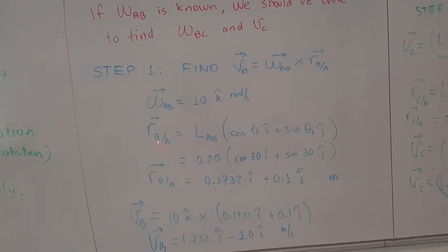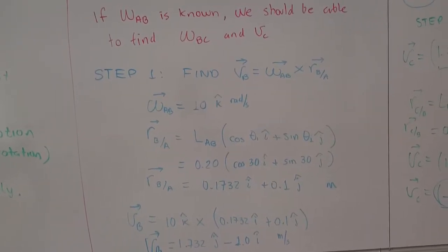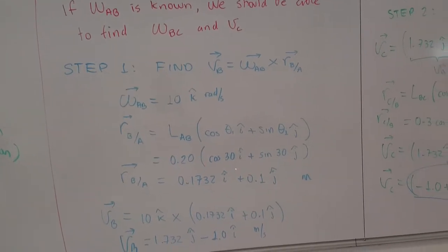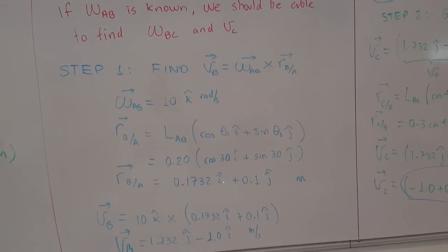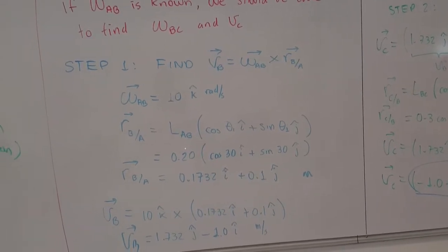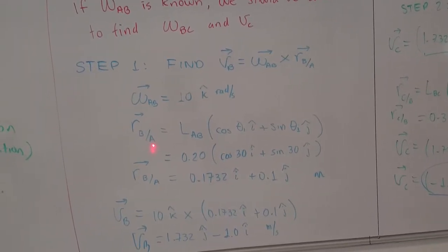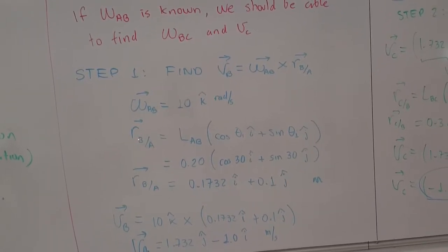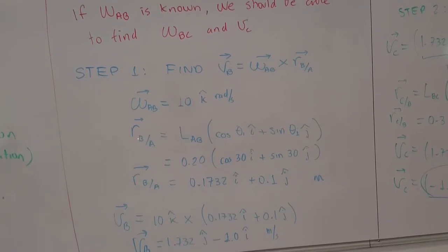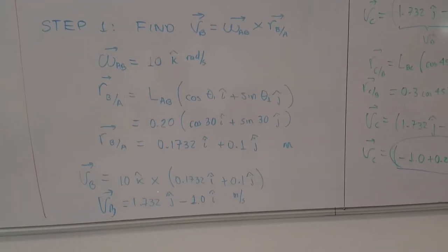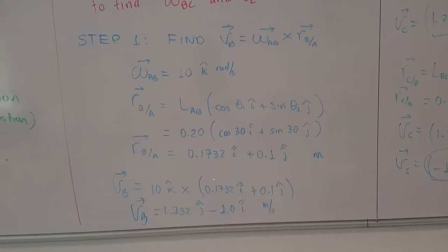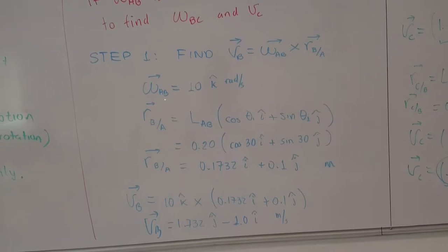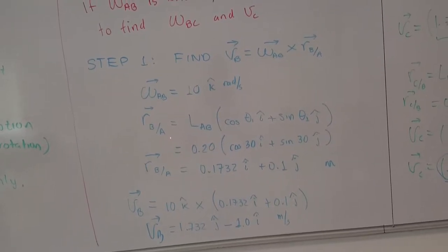We have here the position vector for the bar that goes from A to B, expressed here with all the data we know. We make some operations and we get this vector. It's very important that you check the signs and that you write the proper position vector going from A to B, because it's not the same as the position vector going from B to A.